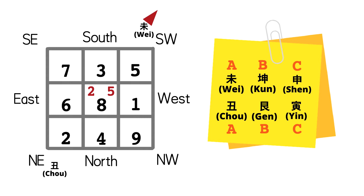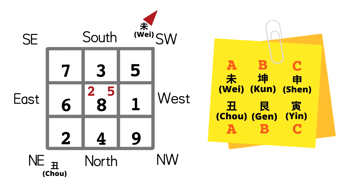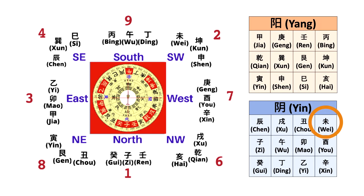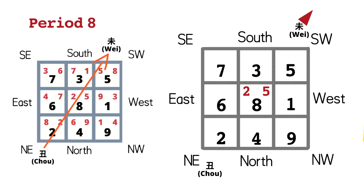As both Chou and Wei are labelled A, that means Chou corresponds with Wei. Therefore, we need to check whether Wei belongs to yin or yang. As we can see in the table, Wei is yin. As mentioned before, if it's yin, the flying pattern is reversed — that is, number 3 flies to the southeast, number 4 to the east, number 5 to the southwest, number 6 to the north, number 7 to the south, number 8 to the northeast, number 9 to the west, and number 1 to the northwest.